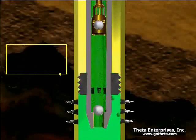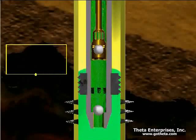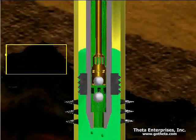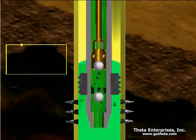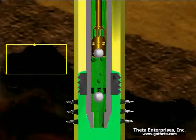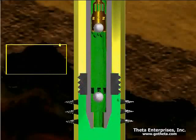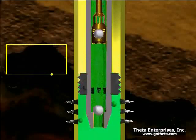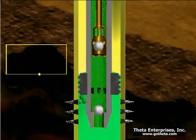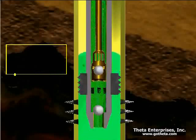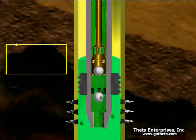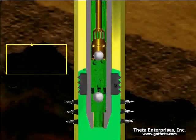It also shows some other things you may not be aware of — like how the fluid level changes. On the upstroke when the pump starts to take fluid in, the fluid level in the wellbore goes down a little bit, and then more fluid comes in to refill the wellbore on the downstroke.